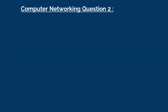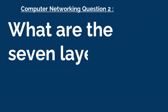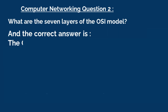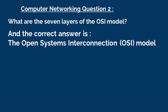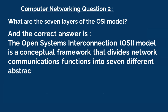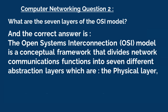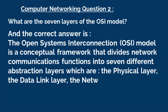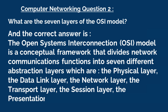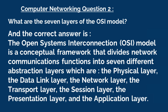Question 2: What are the seven layers of the OSI model? The correct answer is, the Open Systems Interconnection model is a conceptual framework that divides network communications functions into seven different abstraction layers, which are: the physical layer, the data link layer, the network layer, the transport layer, the session layer, the presentation layer, and the application layer.